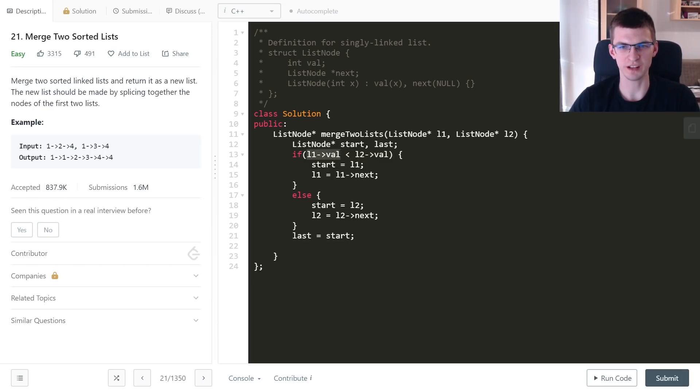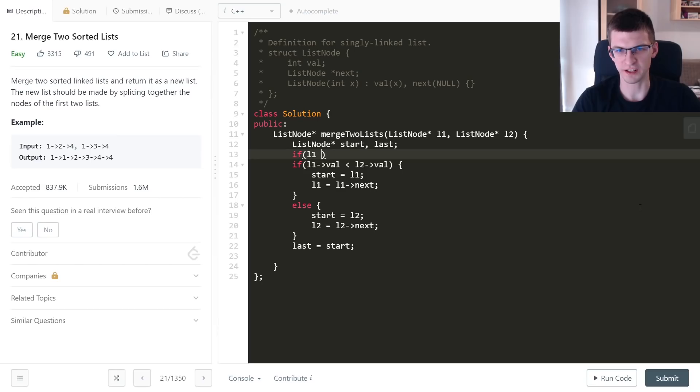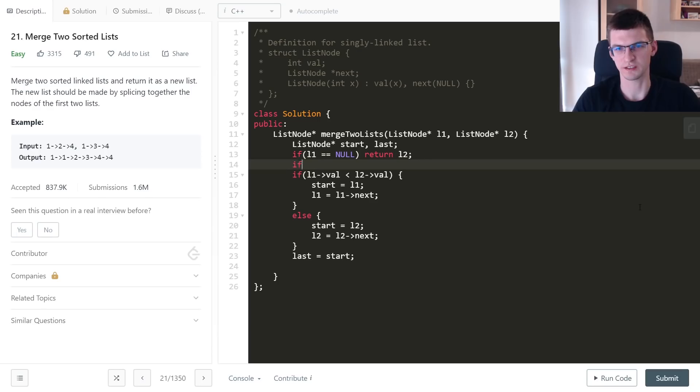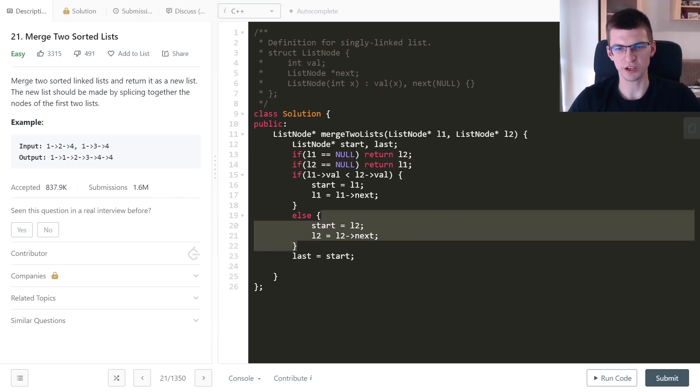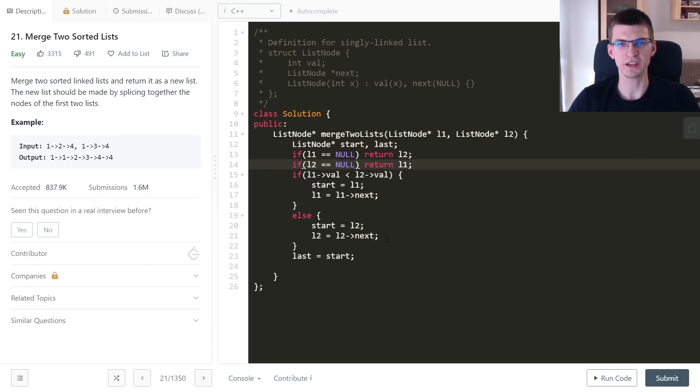I should here add if L1 is equal null then just return L2 and if L2 is null return L1, but this seems over complicated and there is a way to improve this.